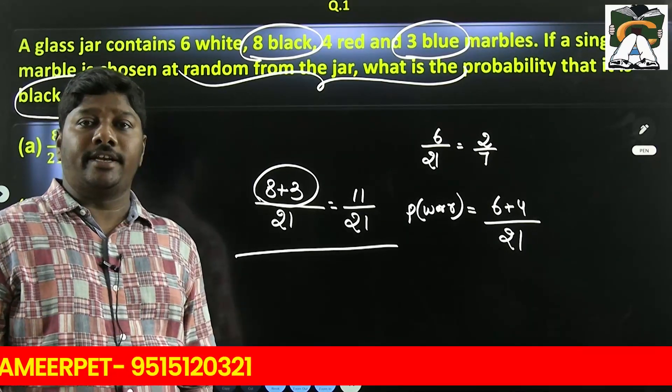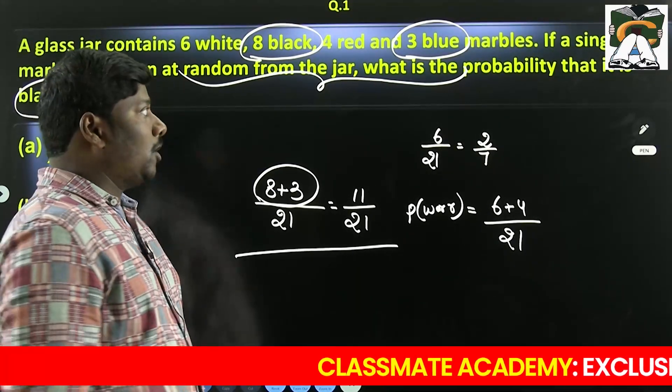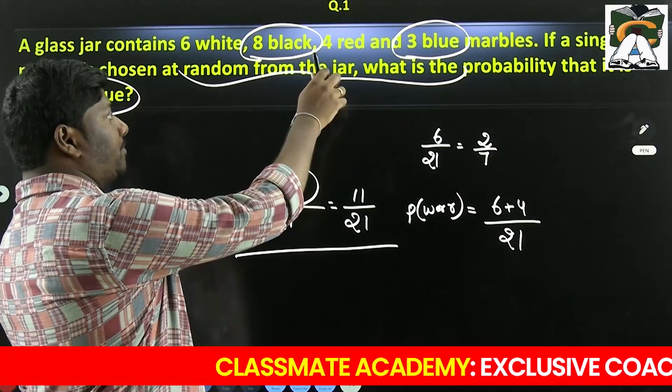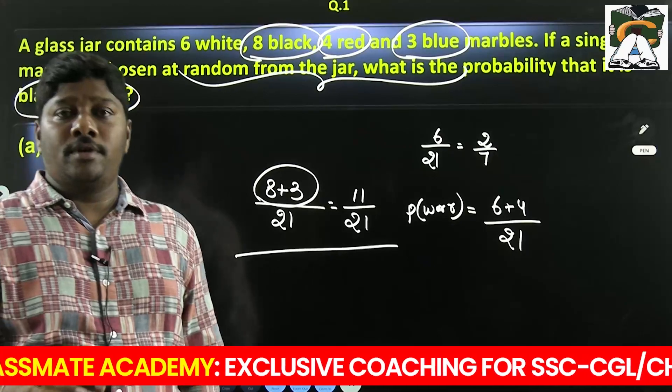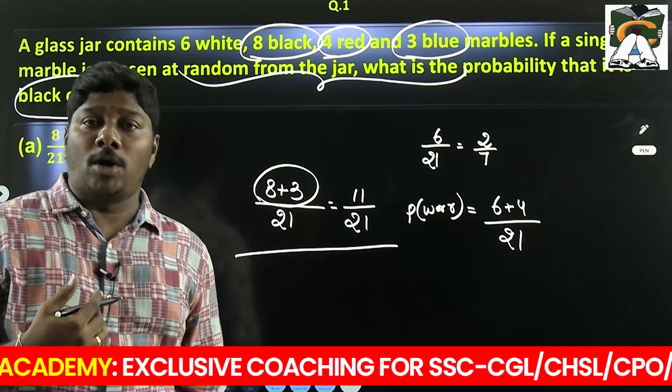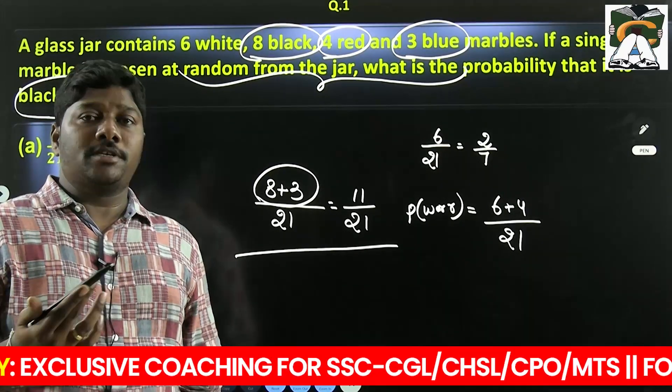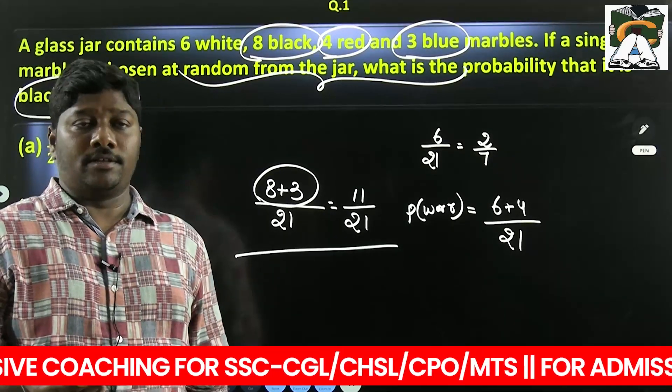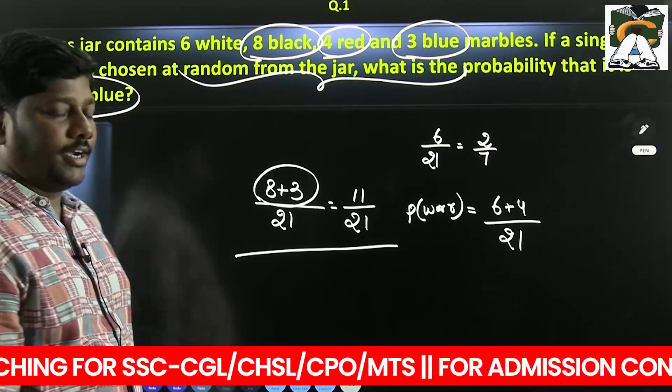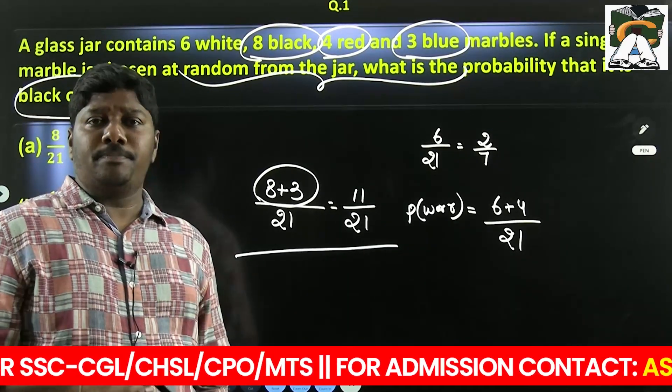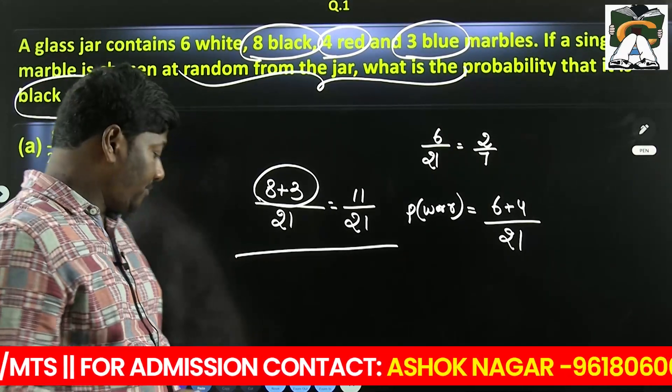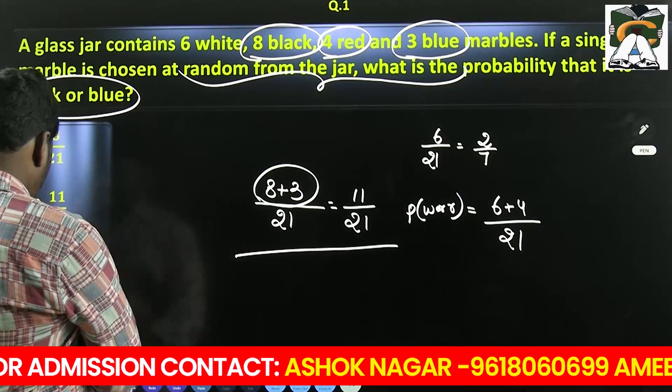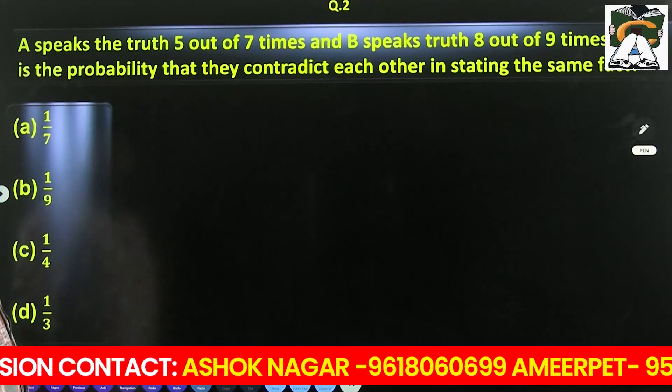What is the probability that the chosen marble is not red. Not red. Red is 4. Out of 21, red 4. So 4 is red. 17 marbles are not red. So probability of taking a marble which is not red. So 21 minus 4 is 17. So 17 out of 21.